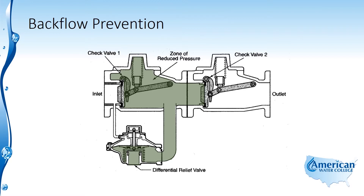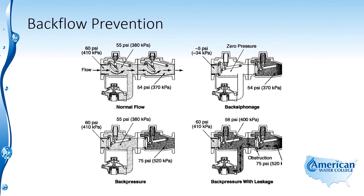Here we can see different configurations from normal flow to back siphonage, back pressure, or back pressure with leakage. In the upper left hand corner, under normal conditions, we have water flowing through this double check valve assembly and the relief valve is closed. We have an inlet pressure of 60 psi, a slight head loss through the valve to 55 psi, and 54 psi leaving the valve — a pressure drop of about 6 psi through the valve, which is normal.